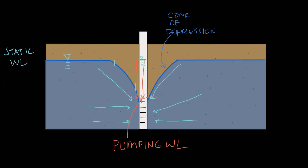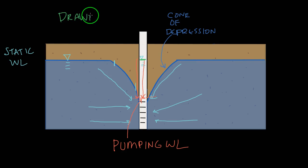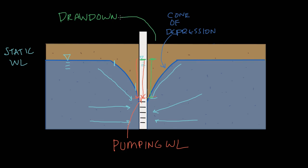The difference between these two levels — the static water level and the pumping water level — is what we call drawdown. Drawdown is the amount of water elevation that gets drawn down inside the well after pumping for a period of time, at which point the pumping water level is established. Drawdown is an important concept because it determines how much water we can pump out of this well — we can't have the drawdown go past our pump, because then we won't be pumping water anymore.